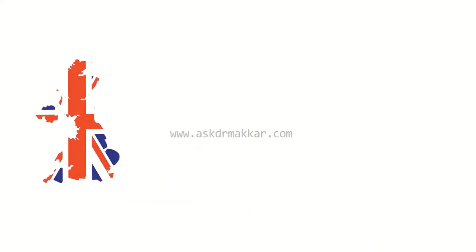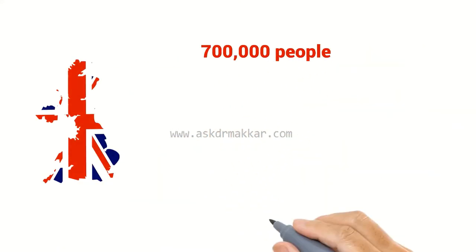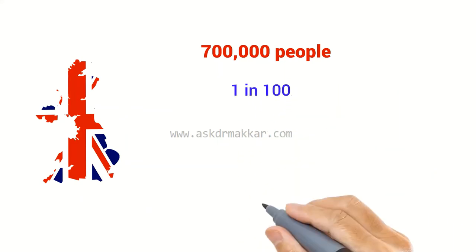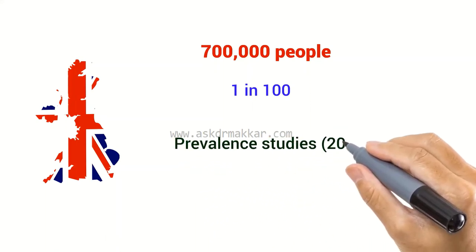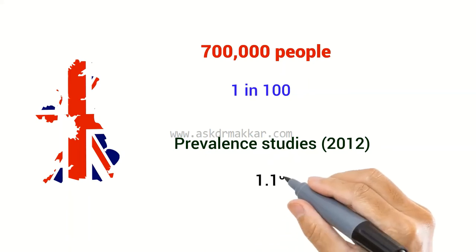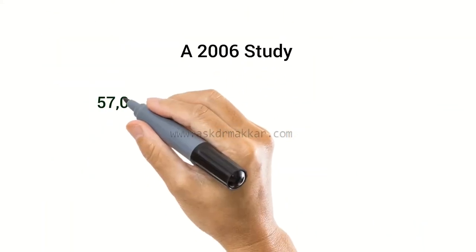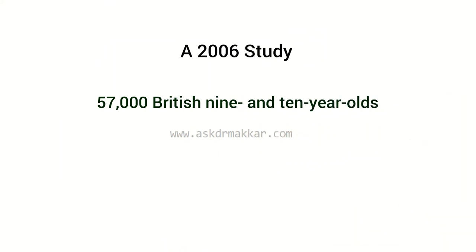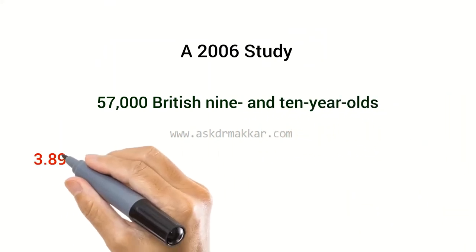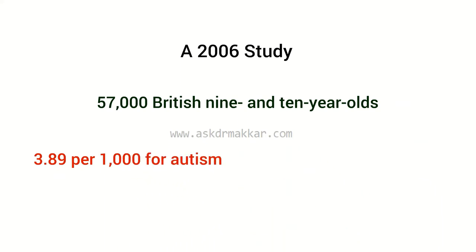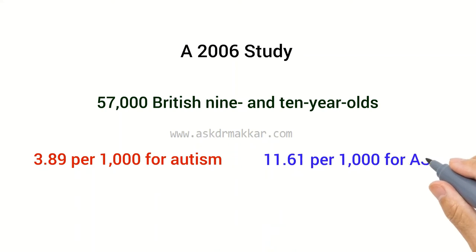UK: there are around 700,000 people on the autism spectrum in the UK — that's more than 1 in 100. The latest prevalence studies from 2012 indicate that 1.1% of the population in the UK may be on the autism spectrum. A 2006 study of nearly 57,000 British 9 and 10-year-olds reported a prevalence of 3.89 per 1,000 for autism and 11.61 per 1,000 for ASD. These higher figures could be associated with broadening diagnostic criteria.